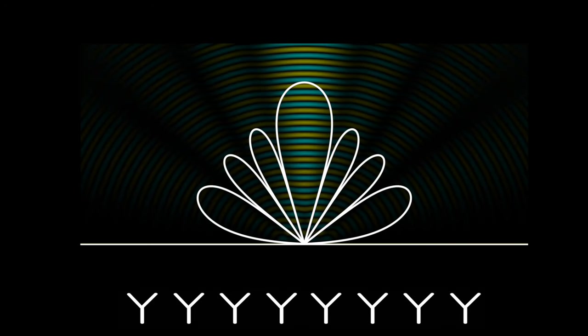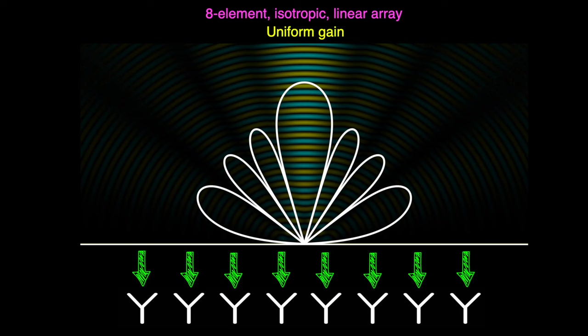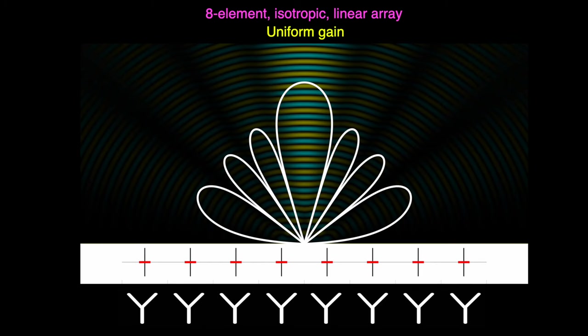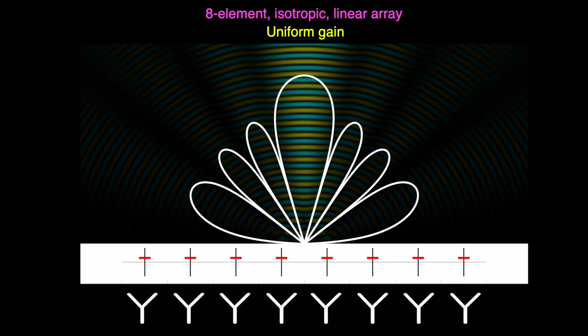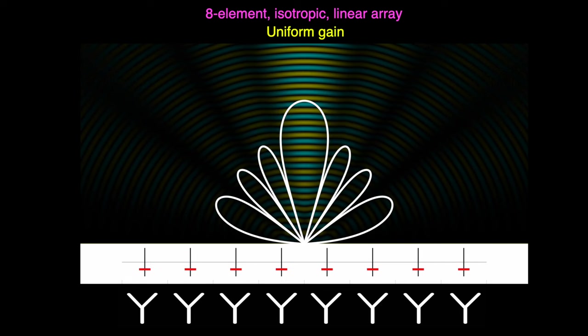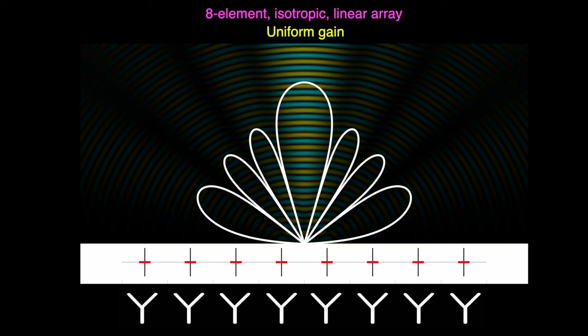Okay, so we know that this is the pattern for an eight element isotropic linear array. And for this pattern, we are sending the exact same signal to each isotropic element. And that means that each signal has the same power, which I've indicated here with these sliders. You can kind of think of these as like volume sliders, where moving them up increases the volume or the gain, and then moving them down decreases the gain.